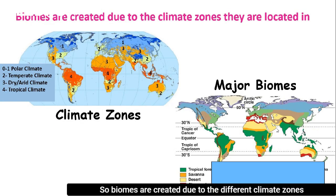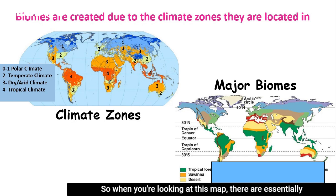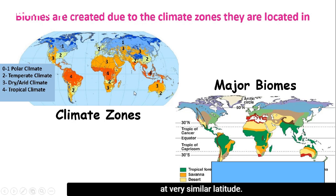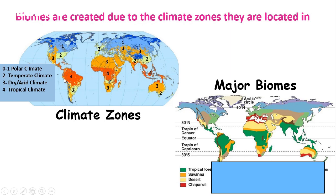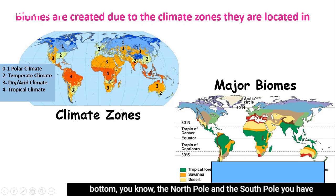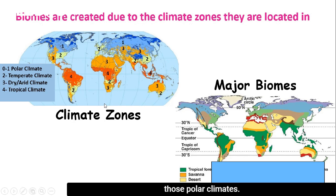Biomes are created due to the different climate zones they're located in. Looking at this map, there are essentially four major types of climate zones, and you can see them progress latitudinally through Earth — essentially bands of similar types of climates occurring at very similar latitudes, though they can also be scattered around a bit. At the very top and bottom, near the North Pole and South Pole, you have polar climates.